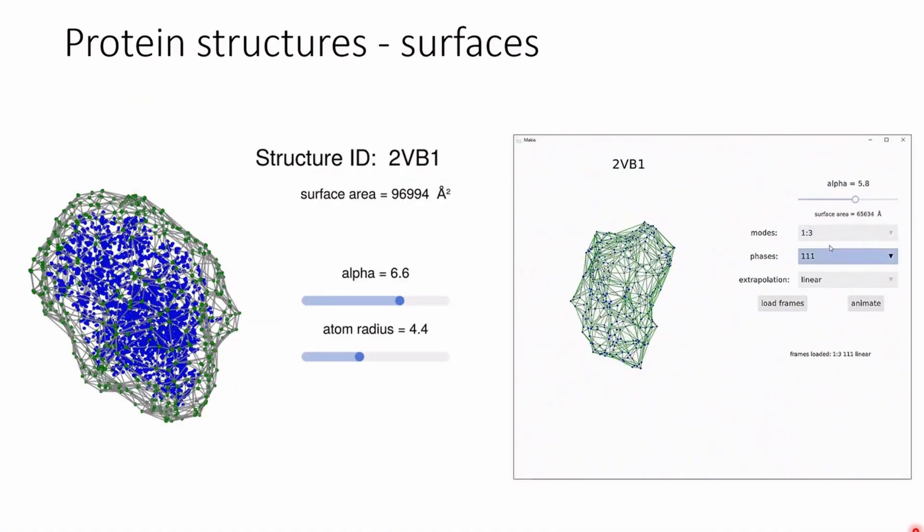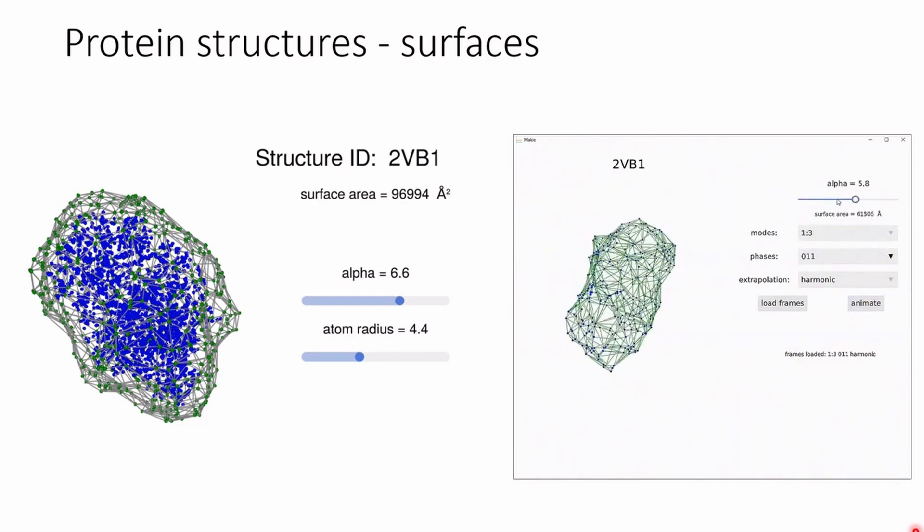Surfaces can also be constructed for protein structures. On the left is an example that can be found in the documentation called AlphaShape. It uses a Python algorithm to compute the surface, and it's one case where Python can come in handy since the three-dimensional version of AlphaShape seen here is not available in Julia yet as far as I know.